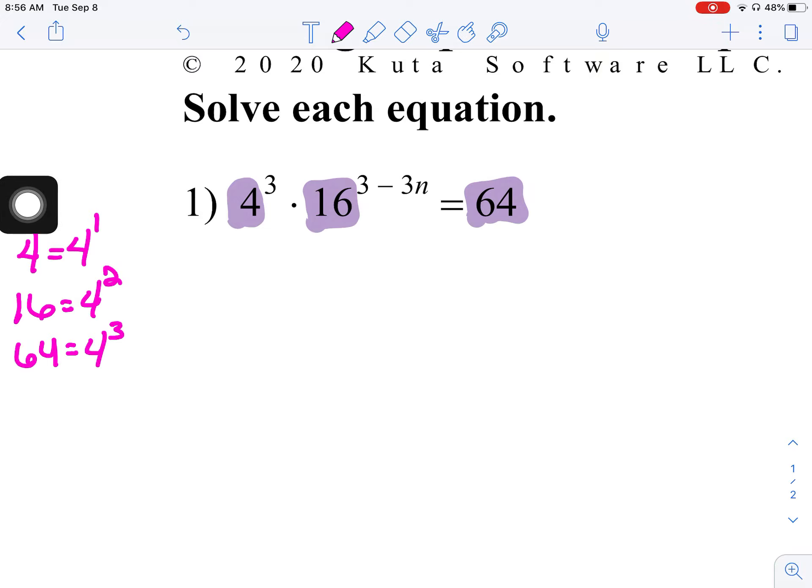So, what we're going to do is take the 4, the 16, and the 64 and create an expression, or in this case an equation, that has all common bases. So, 4 to the third stays 4 to the third. 16 is going to get replaced with 4 squared. And then, this exponent that was there is going to stay, so 3 minus 3n, and 64 is going to get replaced with 4 to the third.